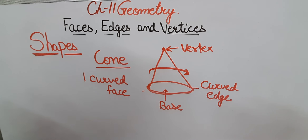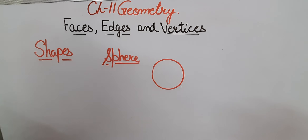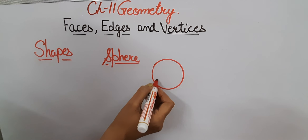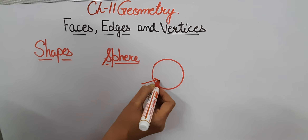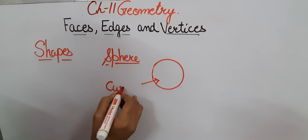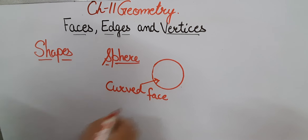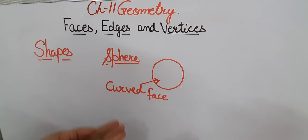This is a sphere, representing a shape like a football or a tennis ball. A sphere has only one curved face, and it has no vertices and no edges, because the whole surface is just a curved surface.